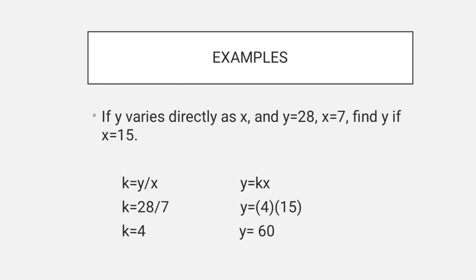Example: If Y varies directly as X, and Y is 28 when X is 7, find Y if X is 15. First, we find the constant. The formula is K equals Y over X. So K equals 28 over 7, which is 4. Now that we have the constant, we substitute: Y equals 4 times 15, which is 60.